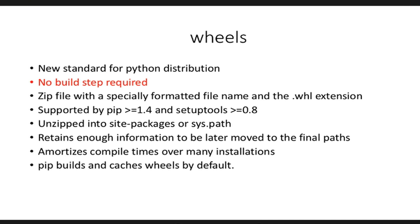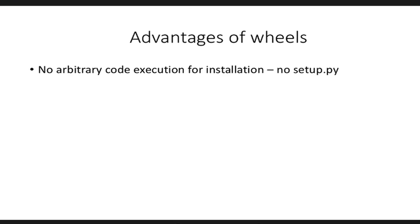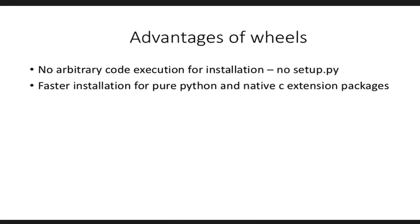While eggs didn't have a formal PEP, wheels do — you should go read PEP 376 if you want to know more. Advantages of wheels: no arbitrary code execution for installation since it's a binary distribution format. It's also a much faster way of installing both pure Python and native C extension packages, because your package author has done all the work of compiling everything and gives you a zip file that you just download, move to the right places in your file system, and you're done.